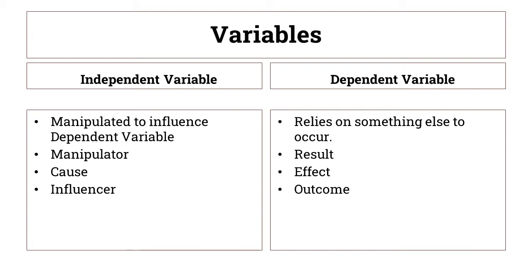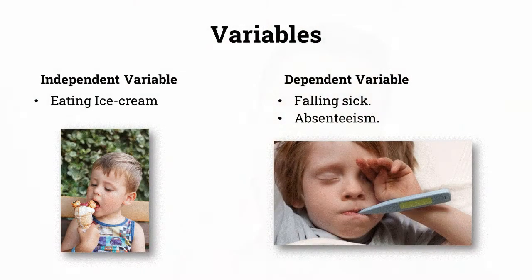Going back to the ice cream example — eating ice cream is the cause or influencer for the dependent variable, which is falling sick. There can also be other dependent variables: falling sick in turn leads to absenteeism. So the independent variable is eating ice cream, while dependent variables could be falling sick or absenteeism.